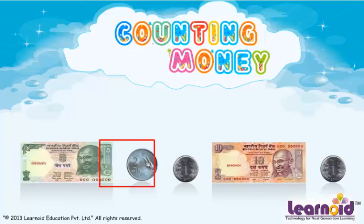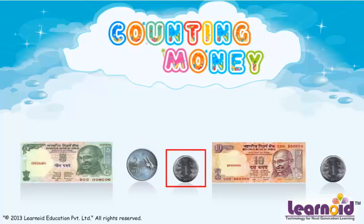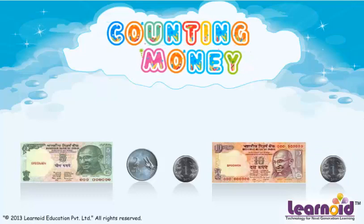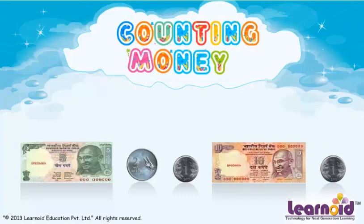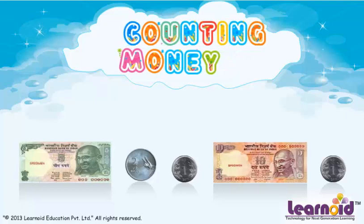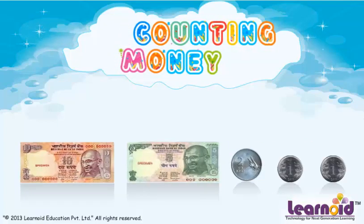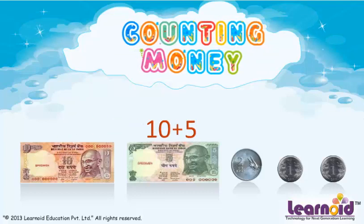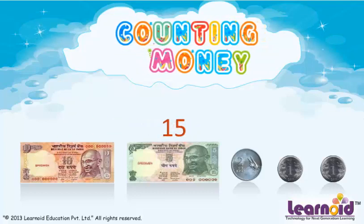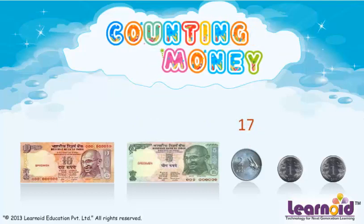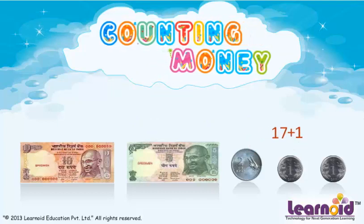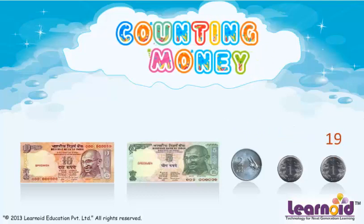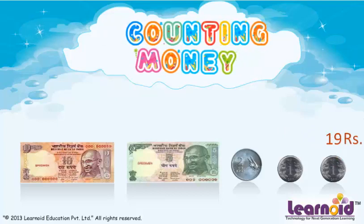5, 2, 1, 10, 1. Now money is arranged in a line from biggest to smallest. Now let's count: 10, 15, 17, 18, 19. Total 19 rupees.